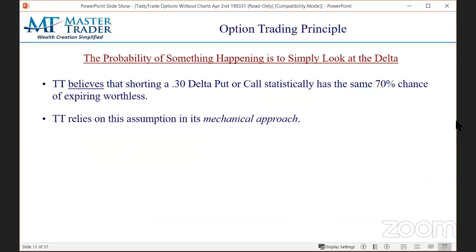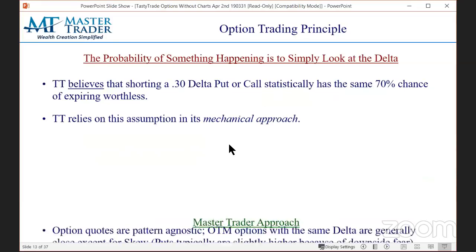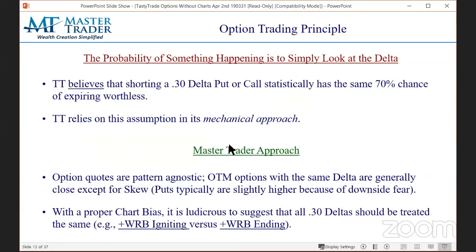Here's another principle of TastyTrade: the probability of something happening is simply to look at the delta. If you look at a delta, that percent is the chance that it's going to expire in or out of the money. TastyTrade believes that shorting a 30-delta put or 30-delta call, regardless of looking at the chart pattern, has the same 70 percent chance of expiring worthless — because the delta is the chance of expiring in the money, therefore out of the money is one minus that. That's their 70 percent, and they use their mechanical method to put trades around that assumption.